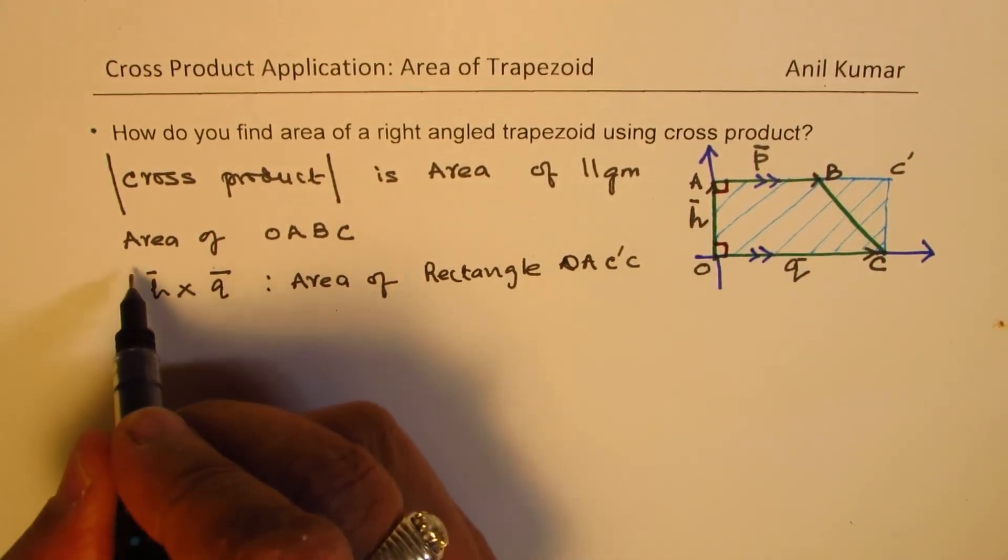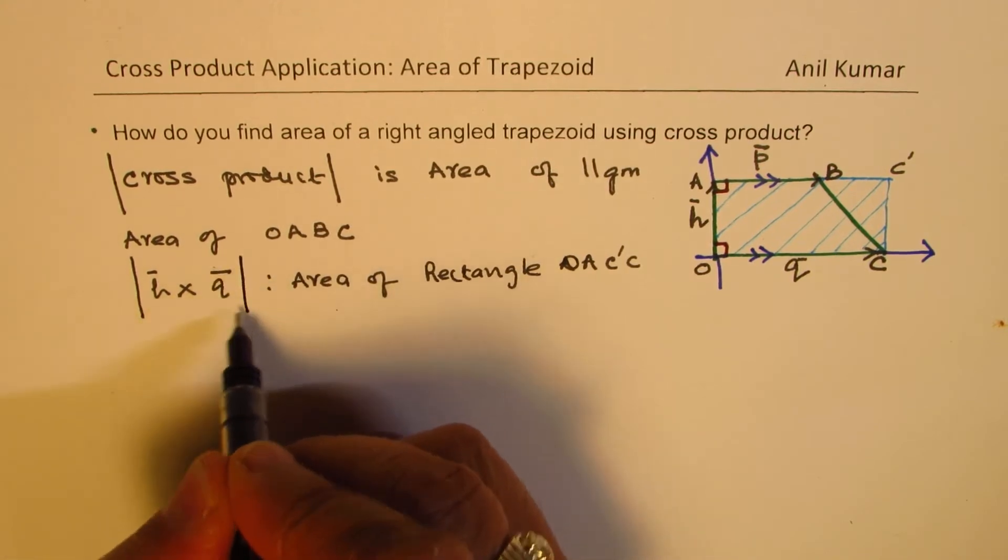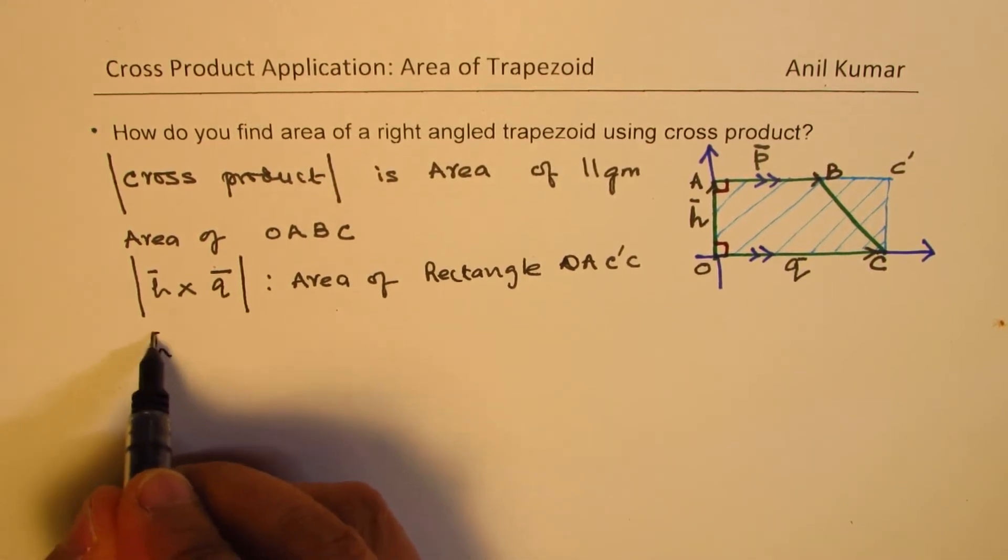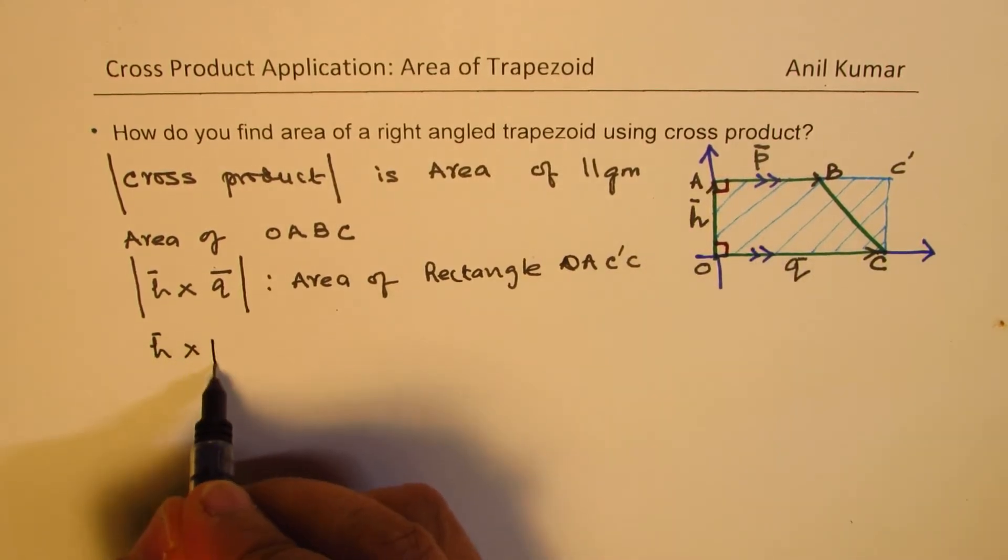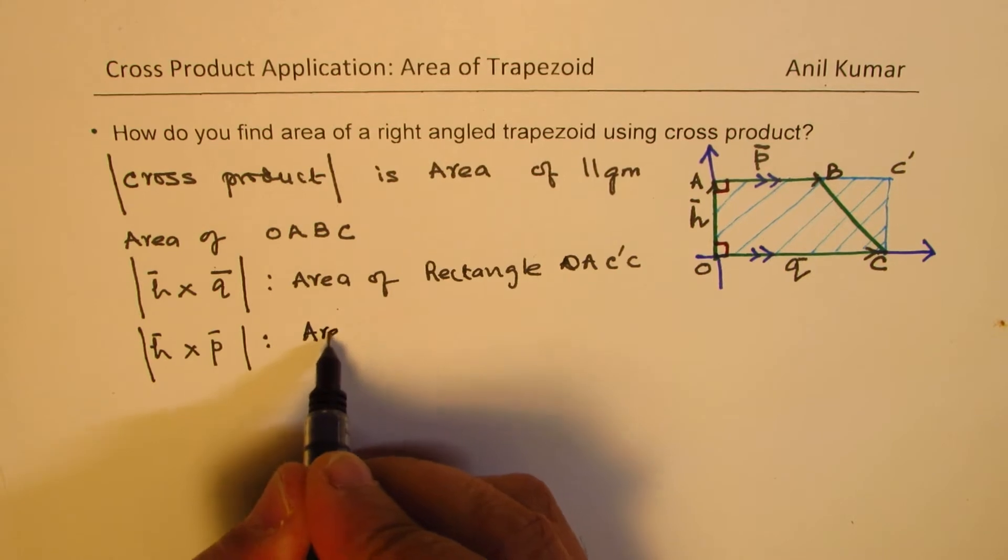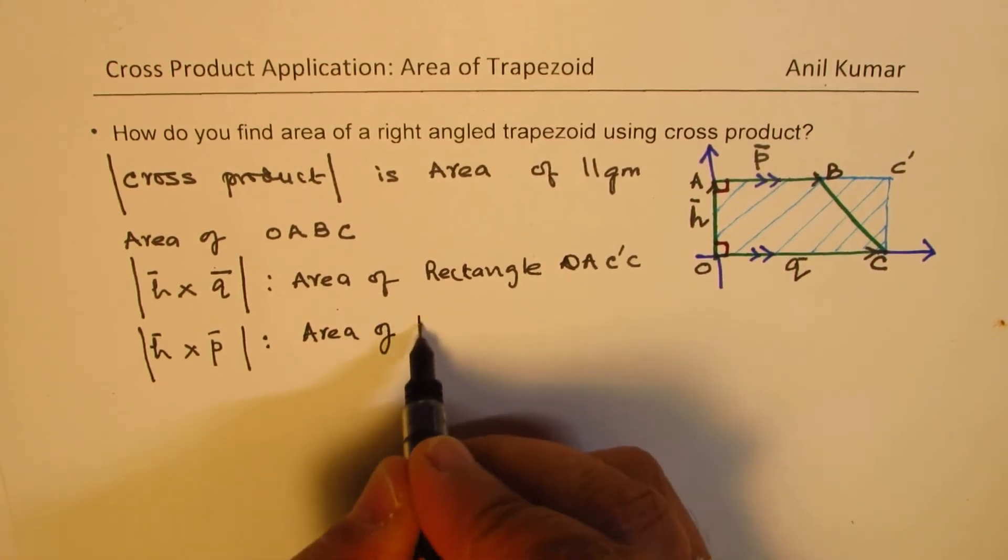If I do a cross product, let me do a magnitude of this. Cross product has a direction, but only the magnitude part is the area part. It's a scalar quantity. So, if you do the cross product of the vector H with P, in that case, you get area of rectangle.